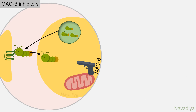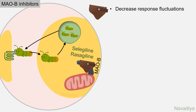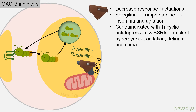Now let's see MAO-B inhibitors. MAO-B degrades dopamine present in the cytoplasm. Selegiline and rasagiline inhibit MAO-B, which prevents degradation of dopamine so more dopamine is available to work, and it also prevents the generation of free radicals. These drugs decrease response fluctuations. Selegiline is metabolized to amphetamine, which produces side effects like insomnia and agitation. These drugs are contraindicated with tricyclic antidepressants and SSRIs, as there is a risk of hyperthermia, agitation, delirium, and coma.